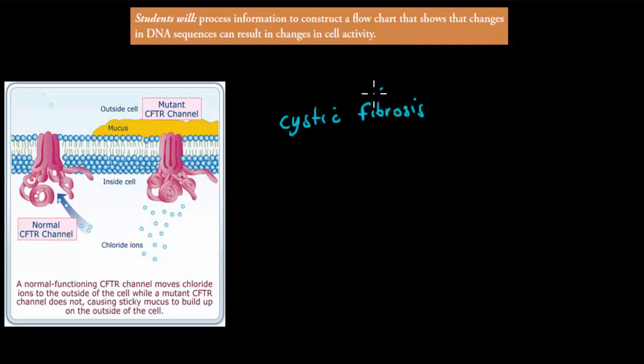And cystic fibrosis is a genetic disease. It's a genetic disease because what actually happens is there's a certain protein which doesn't get produced anymore because there's a mutation within a gene.